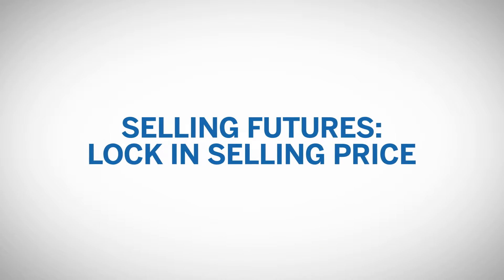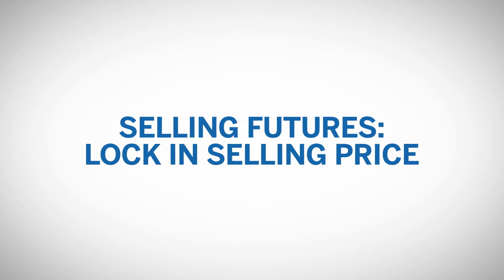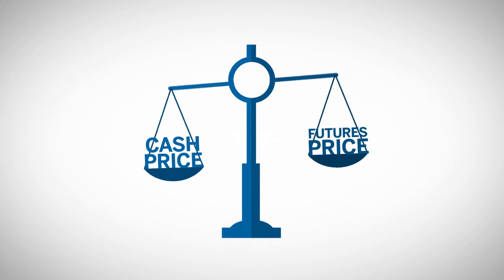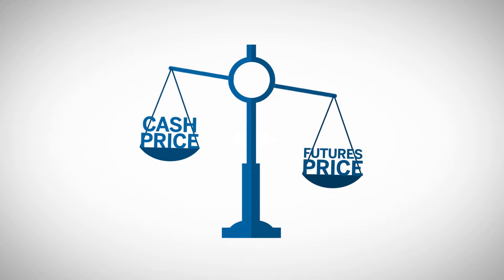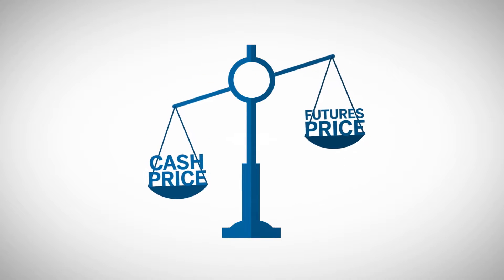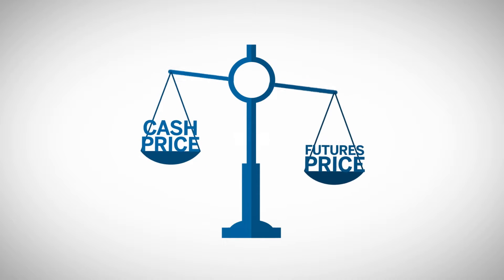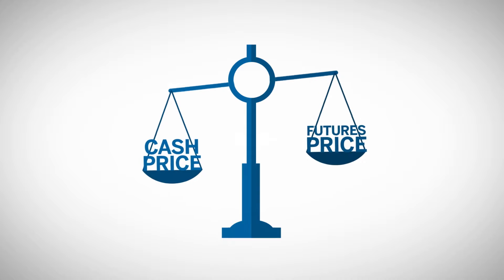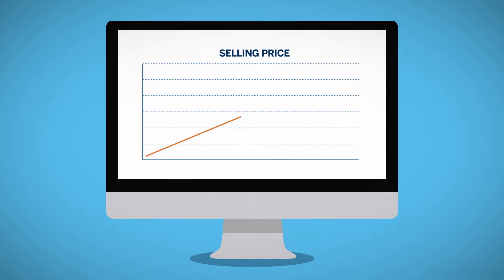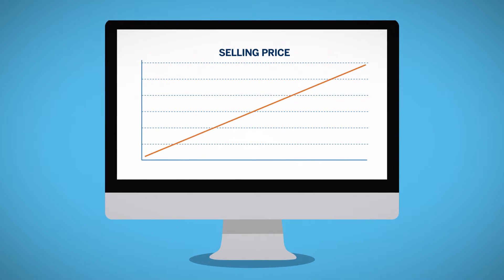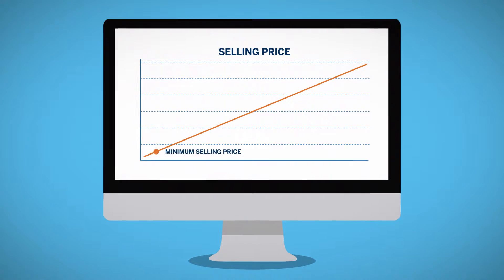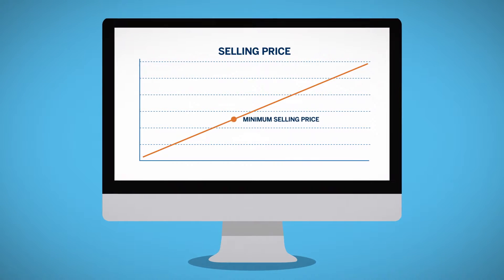Selling futures contracts allows short hedgers to lock in a selling price for grain, because a loss in the cash market is made up by a gain in the futures market and vice versa. This strategy will completely satisfy the needs of many short hedgers who have calculated the selling price that will allow their business to be profitable. However, some hedgers would like the ability to establish a minimum selling price while still being able to take advantage of a potential increase in grain prices.